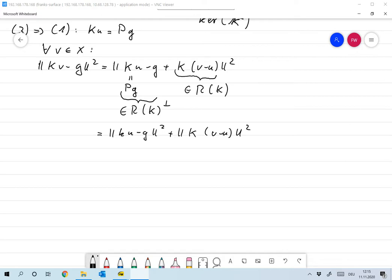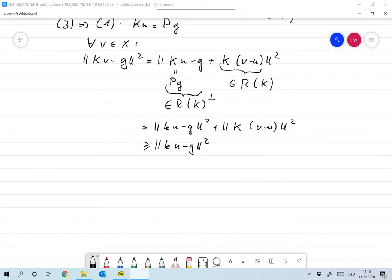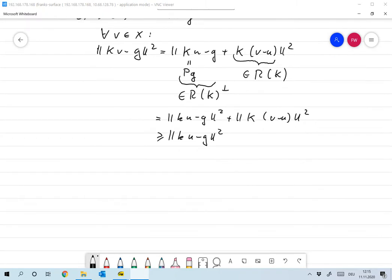And now we find that this is larger or equal than the norm of ku minus g for any vector v, for any element v in x. So that means that u is a least square solution.